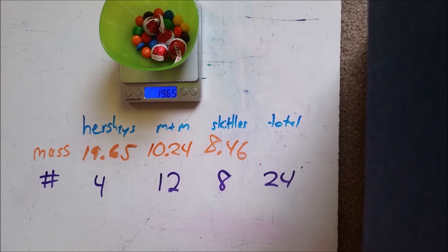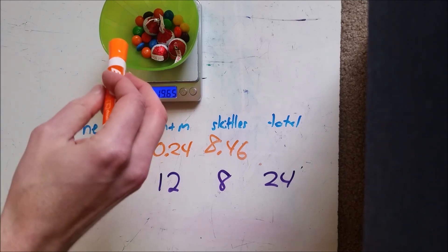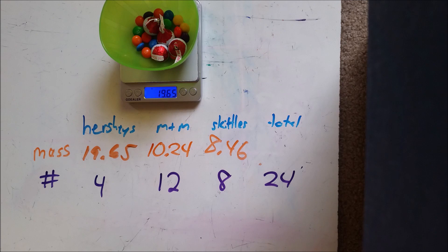So if I said I want to know what the average mass of one piece of candy is, I have 19.65 grams for four Hershey's, 10.24 grams for 12 M&Ms, and 8.46 grams for eight Skittles. One thing that I could do is I could